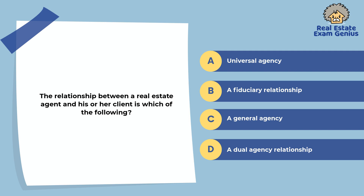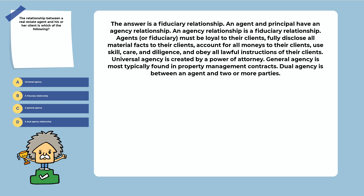The relationship between a real estate agent and his or her client is which of the following? Universal agency, a fiduciary relationship, a general agency, or a dual agency relationship. The answer is a fiduciary relationship. An agency relationship is a fiduciary relationship. Agents must be loyal to their clients, fully disclose all material facts, account for all money, use skill, care, and diligence, and obey all lawful instructions of their clients. Universal agency is created by a power of attorney. General agency is most typically found in property management contracts.